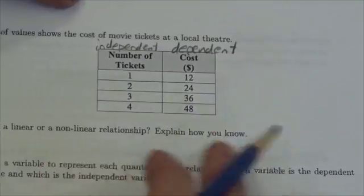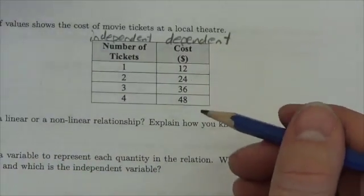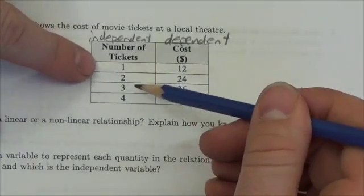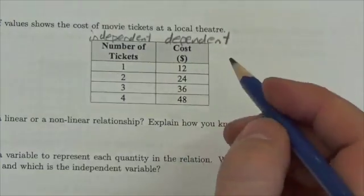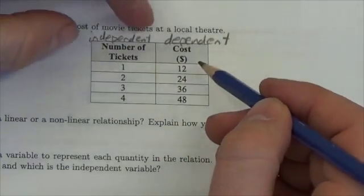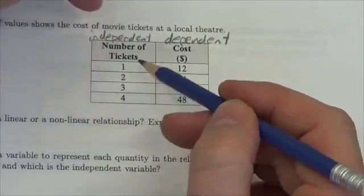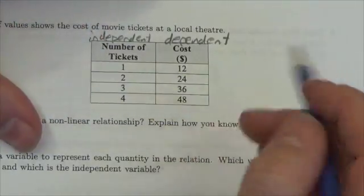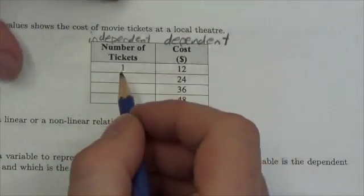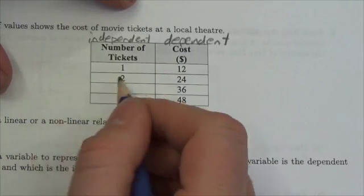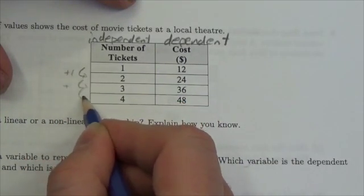Is this relation linear or non-linear? Well in a linear relationship, there's a proportional change in the dependent variable for every consistent change in the independent variable. Here's a place where I really need to know the difference between those two. So as I go down here, this is going to increase by one, increase by one, increase by one.